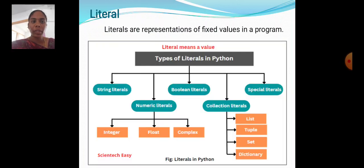Literals are representations of fixed value in a program. There are five types of literals: string literals, numeric literals, boolean literals, collection literals, special literals.